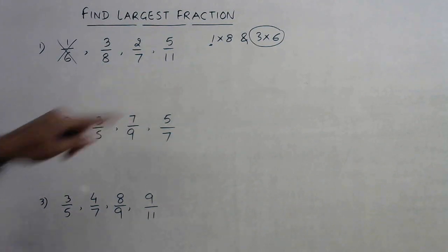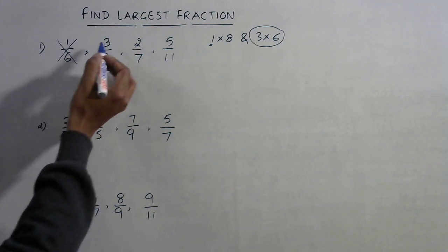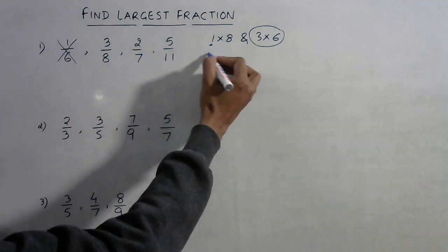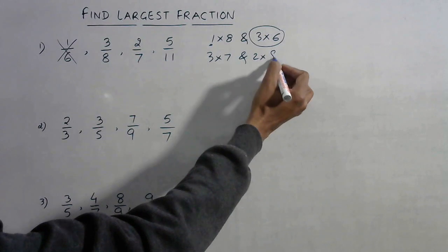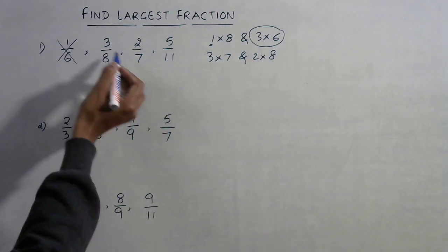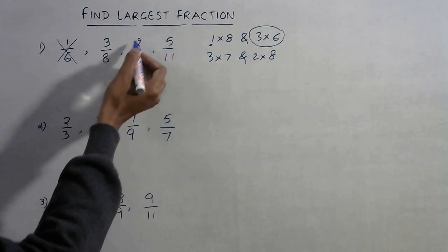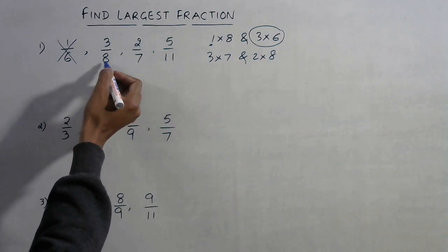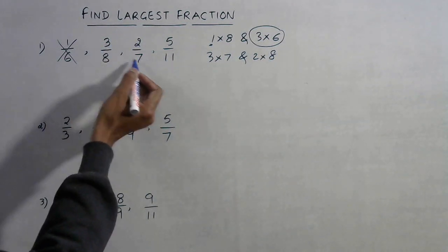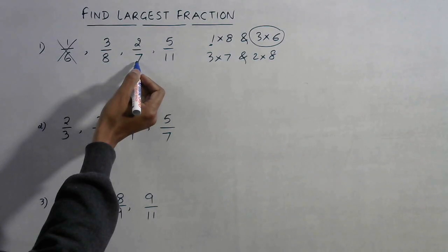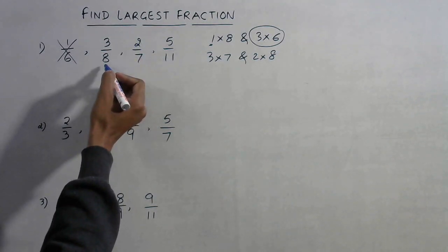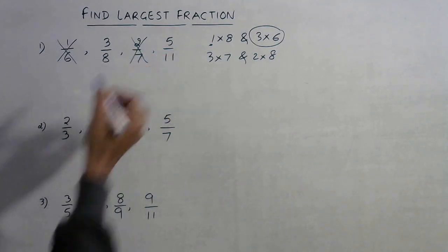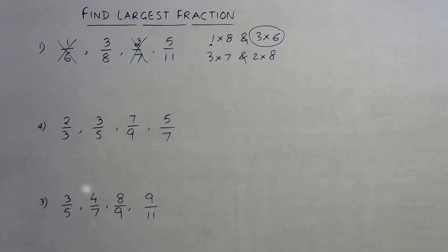Now compare 3/8 and 2/7. Cross multiply: 3 into 7 is 21, and 2 into 8 is 16. So 3 into 7 gives the larger product, and 2 into 8 gives the smaller product, so 2/7 is discarded.